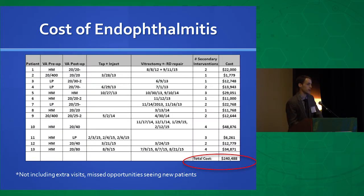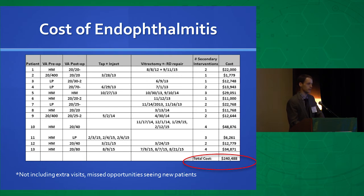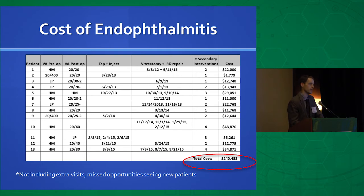Looking at the cost of endophthalmitis, our numbers are probably higher than an ambulatory surgery center. The overall cost of all cases was $240,000 — not what we were reimbursed, but what we charged. This encompassed inpatient stays and the cost of all medicines, and did not include the cost of extra follow-up visits resulting from endophthalmitis.